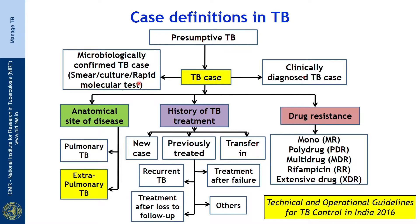Then we have to try to do a clinically diagnosed TB, which is mostly the commonest in extrapulmonary TB. Once you know it is a TB case, we have to know whether it is a patient who has already taken treatment, or it is a new case, or it is a drug resistant TB. History of TB is the way where we find out whether it is a new case, a previously treated case, or a patient who has come from somewhere with already diagnosed TB.